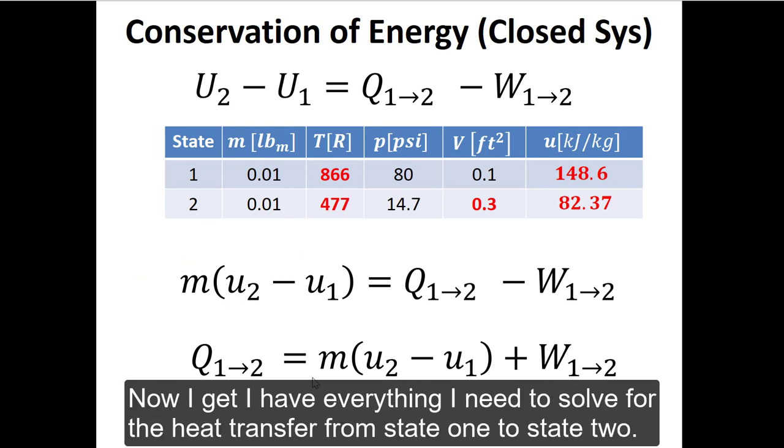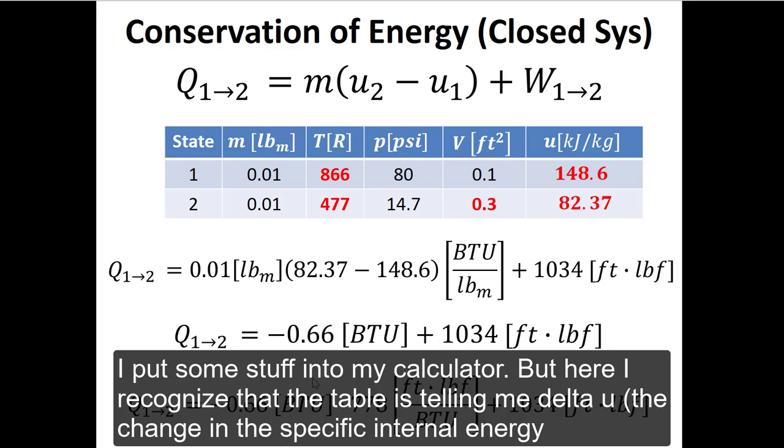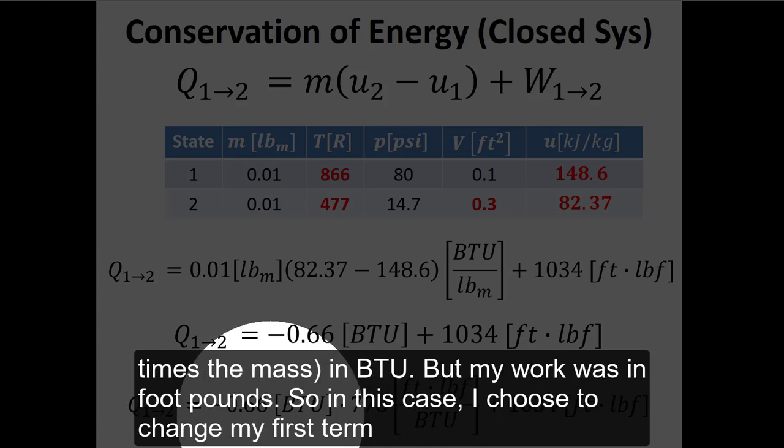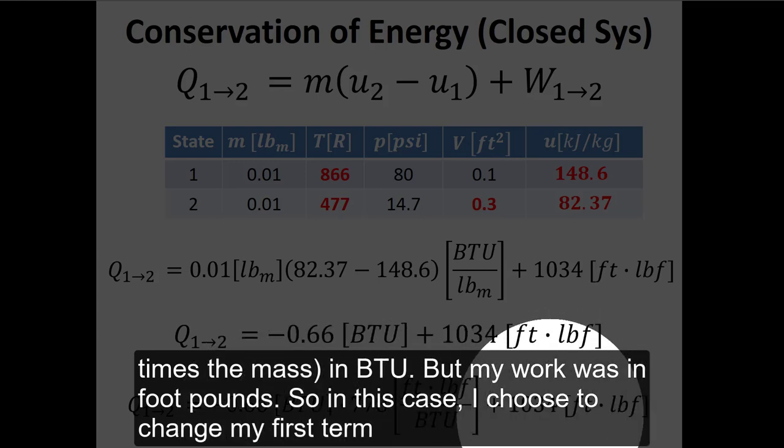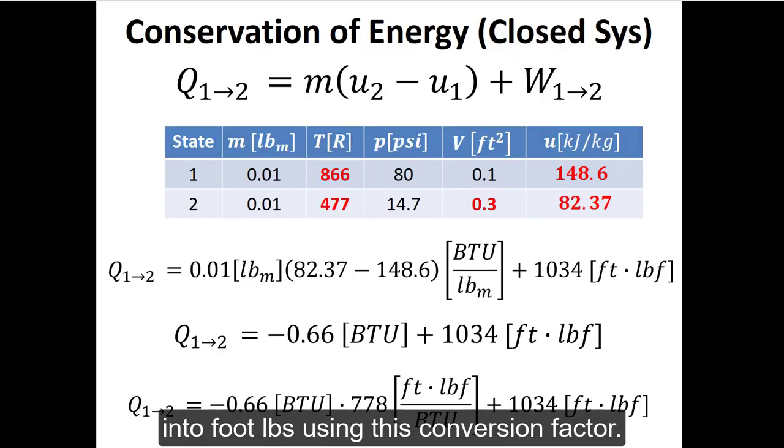Now again, I have everything I need to solve for the heat transfer from state one to state two. I put some stuff into my calculator, but here I recognize that the table is telling me delta U, the change in specific internal energy times the mass, in BTU. But my work was in foot-pounds, so in this case I choose to change my first term into foot-pounds using this conversion factor.